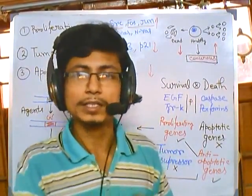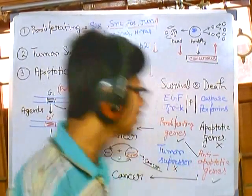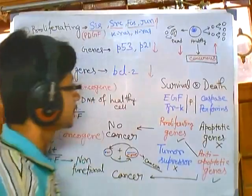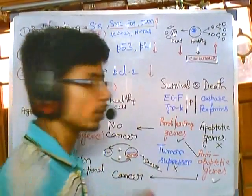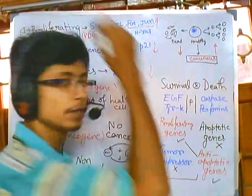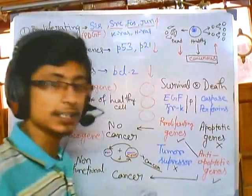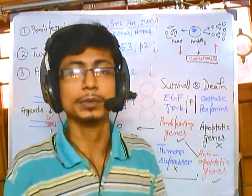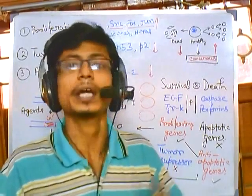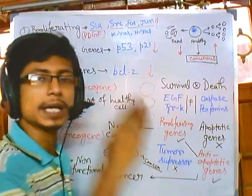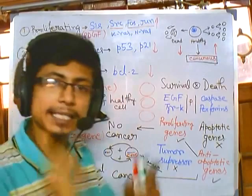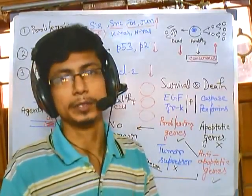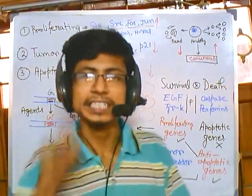Each cell in our body has all the different types of genes. Every cell — from hair cells to kidney cells, heart cells to neurons — has the same number and type of chromosomes, and therefore all genes. For example, liver cells carry the gene for producing the neurotransmitter acetylcholine, but they never express it because they don't require it.